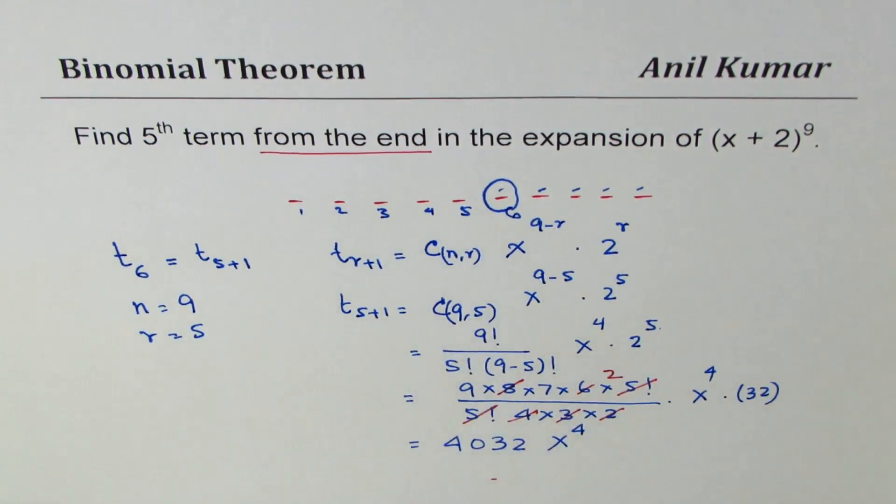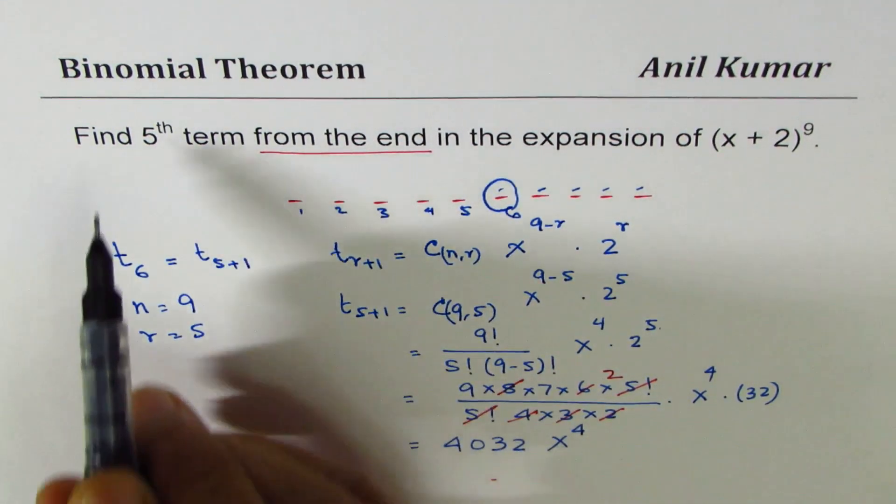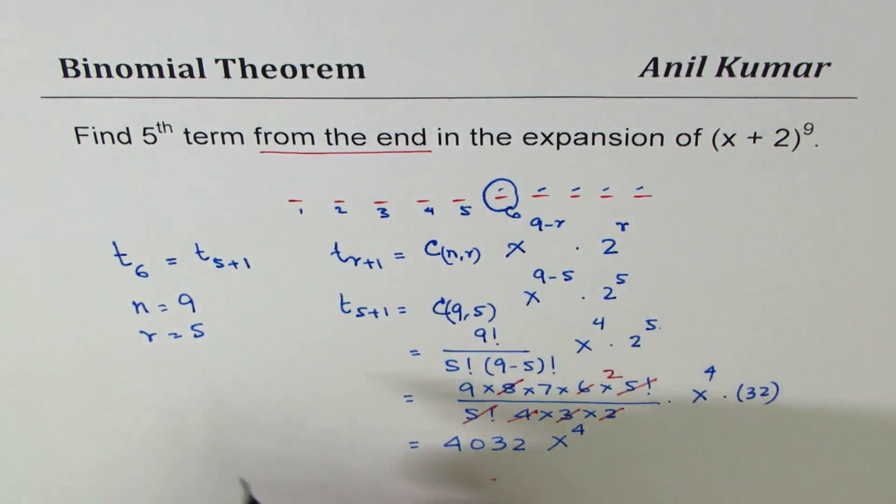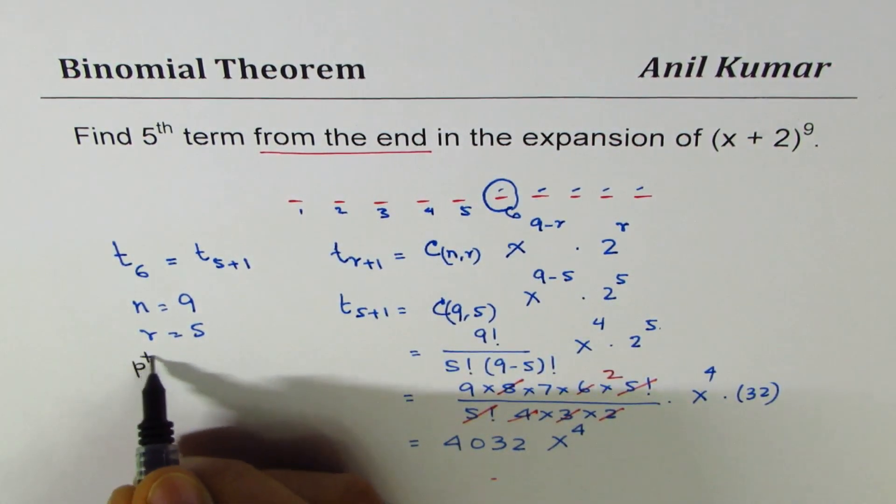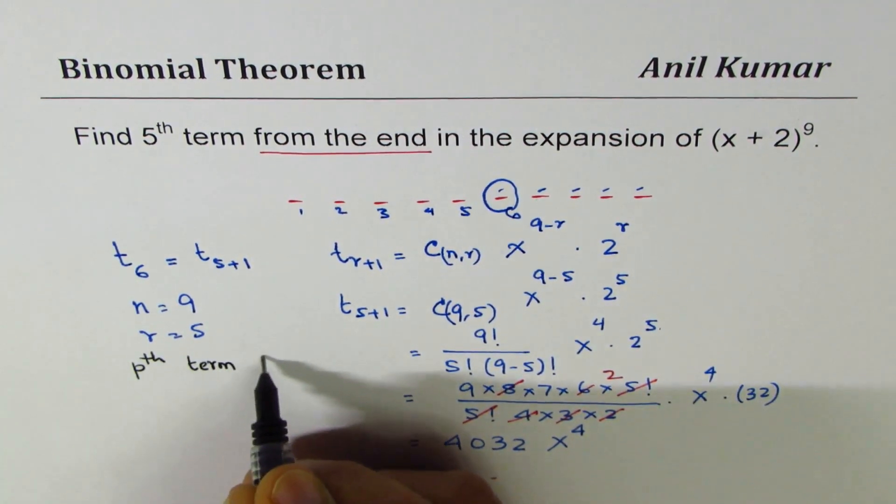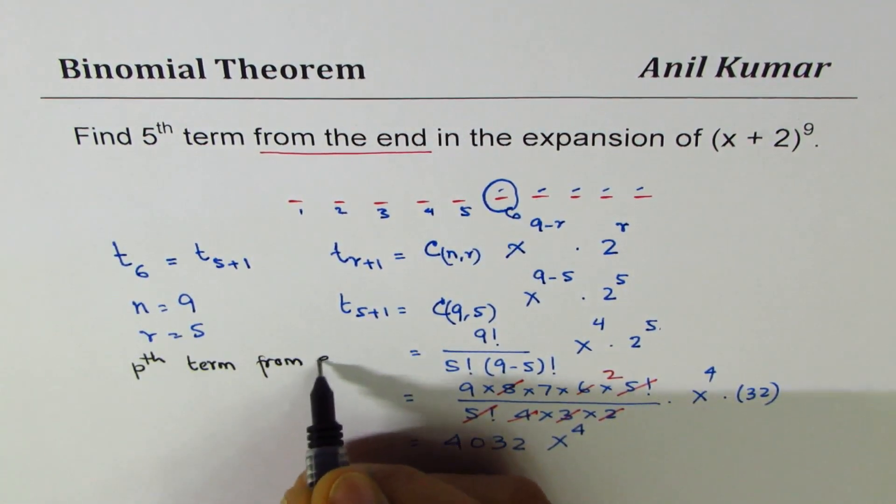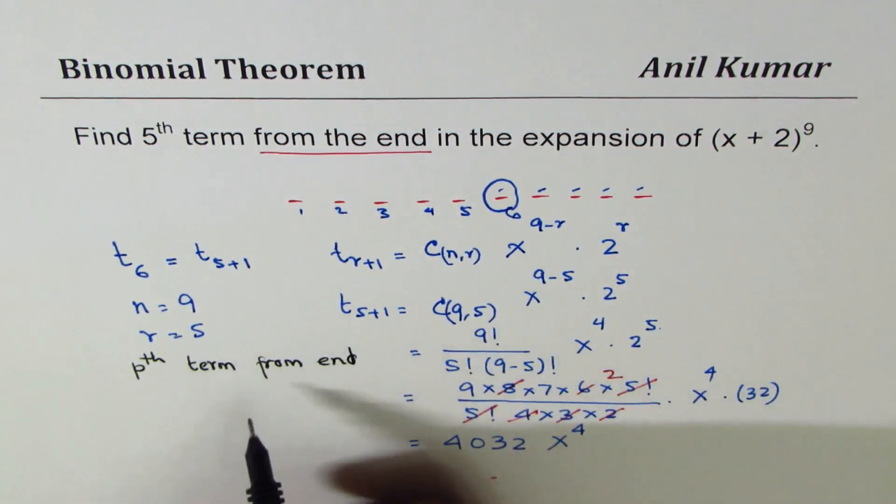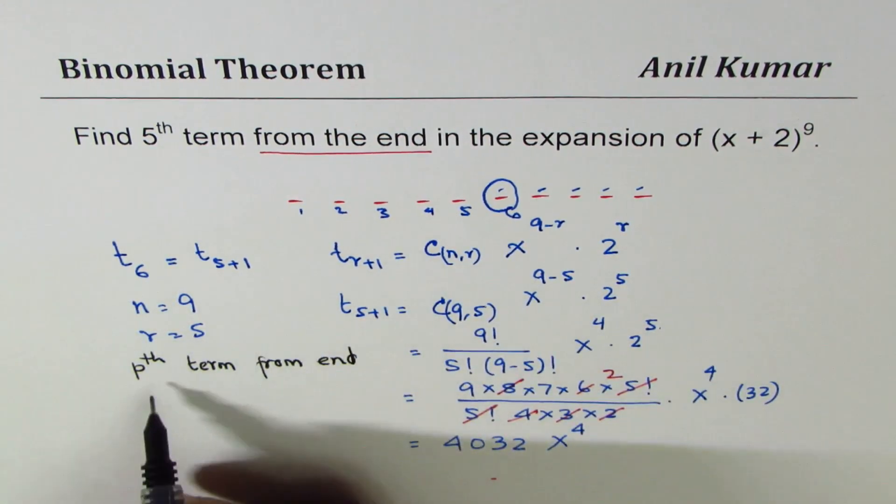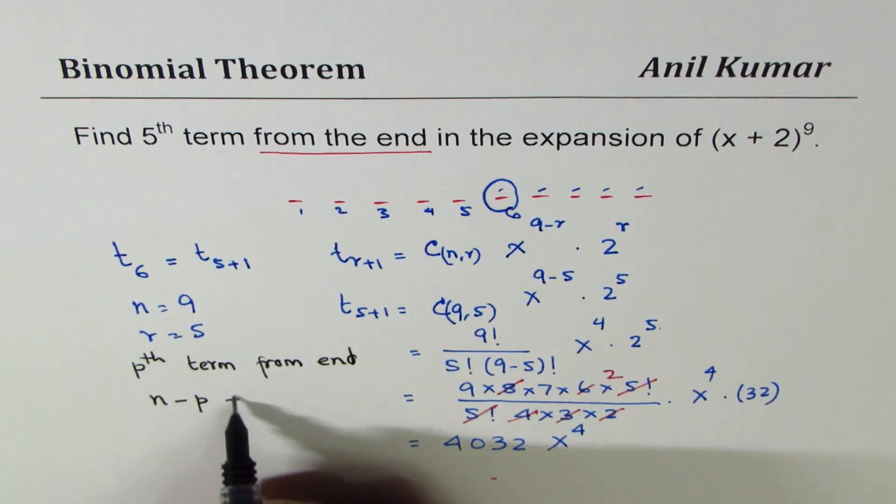Now, we can also put a general formula here. If we are given pth term from the end, the formula is: from the beginning, it is going to be n minus p plus 2.